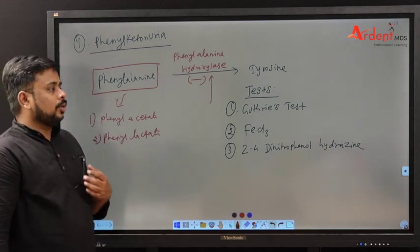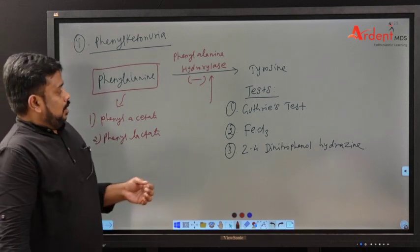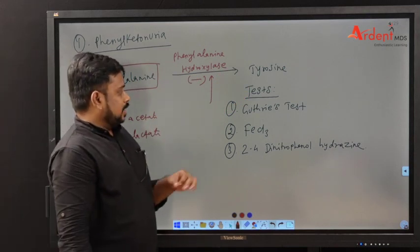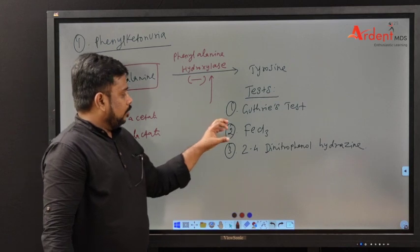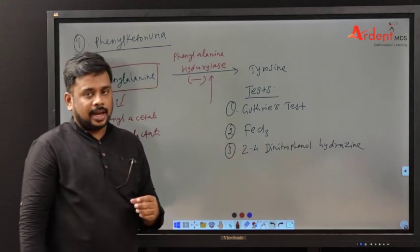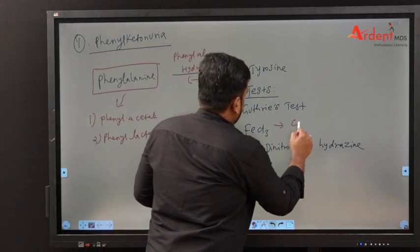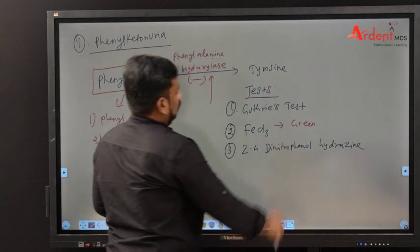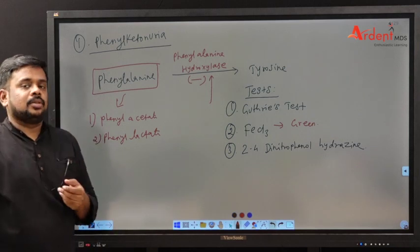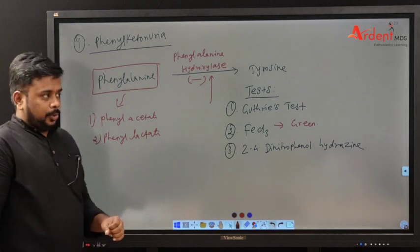For treatment of phenylketonuria, the patient should be given a phenylalanine-restricted diet. Tests used for diagnosing phenylketonuria include: Guthrie's test, Ferric Chloride test (which gives a green color), and 2,4-dinitrophenylhydrazine test (which gives a yellow color).